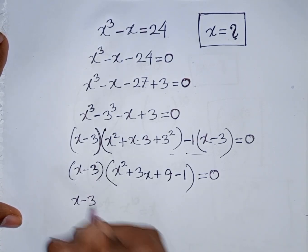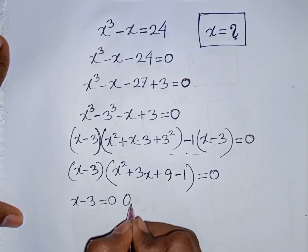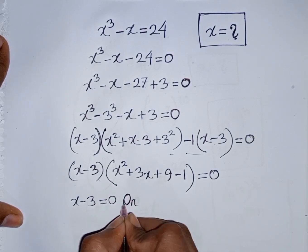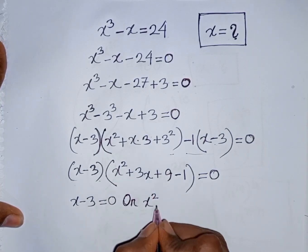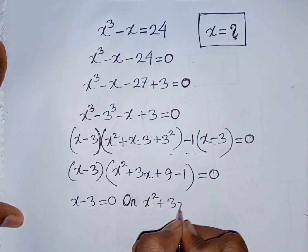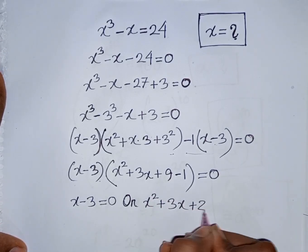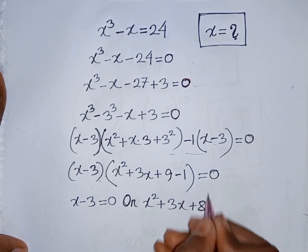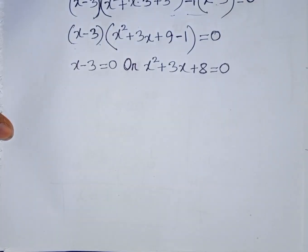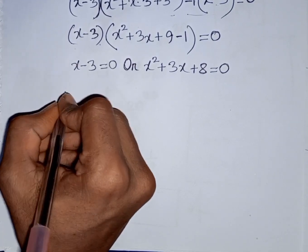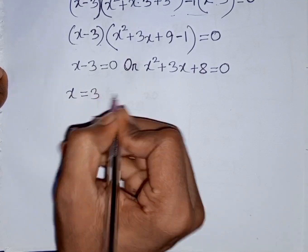We can write x minus 3 equal to 0, or x² plus 3x, then plus 9 minus 1, that will be plus 8, equal to 0. We can write x equal to — taking minus 3 to the right side — so x will be plus 3.